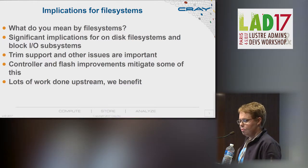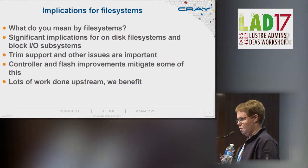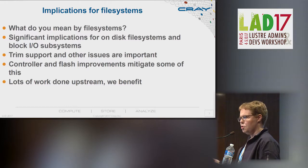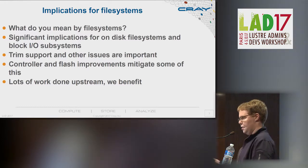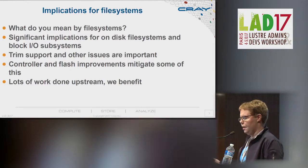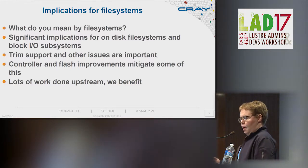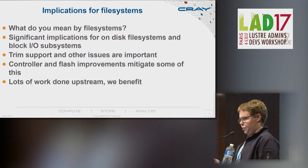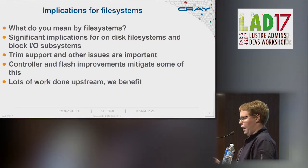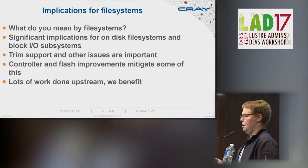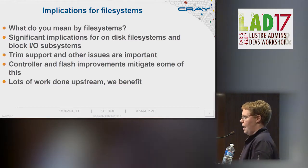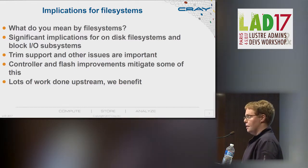These have implications for file systems, but it kind of depends what you mean by file systems. Lustre is a lot of things: it's the client stack, the network stack, and an on-disk file system, and it includes the Linux kernel block IO subsystem. A lot of work has been done in ext4 and especially in the block IO subsystem of the Linux kernel to improve things for flash, and it's been done.